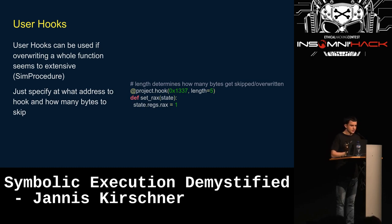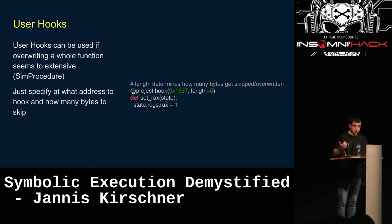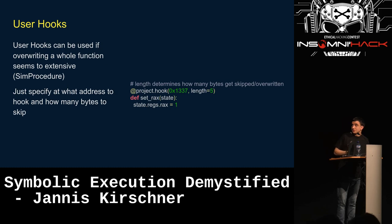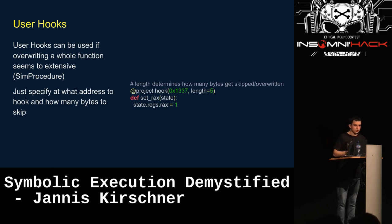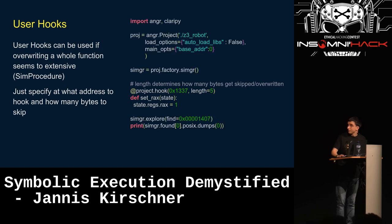If that's too expensive, you can also use project hooks or user hooks, where you specify an address, specify how many bytes you want to override, and then in angr's pseudo-Python assembly specify what you want to do — in this case, just setting a register value. Also very quick and simple to implement.